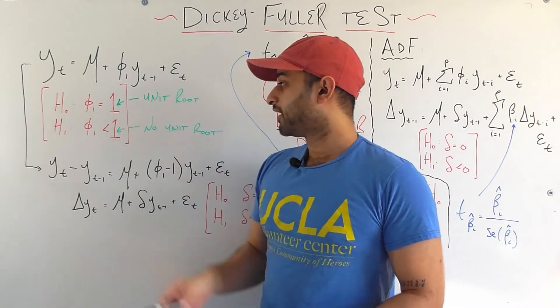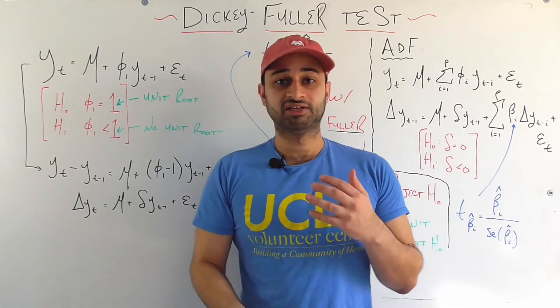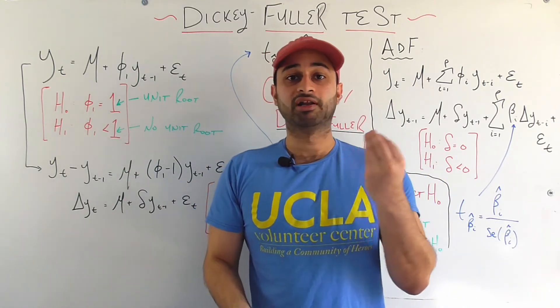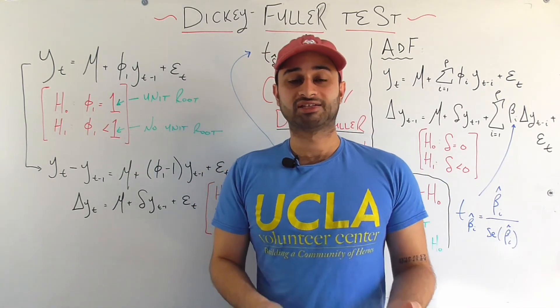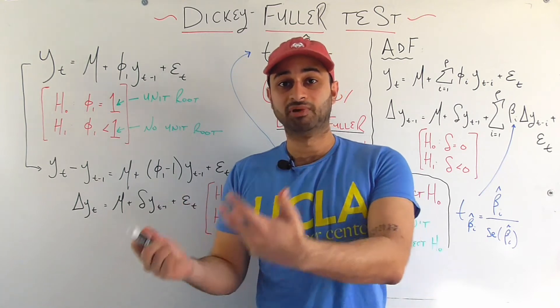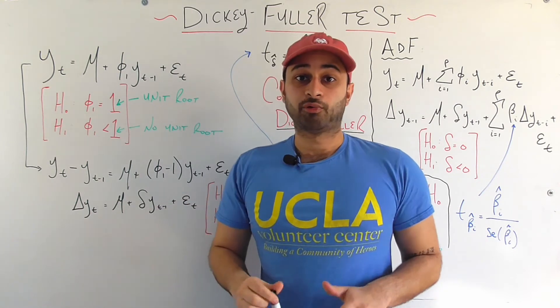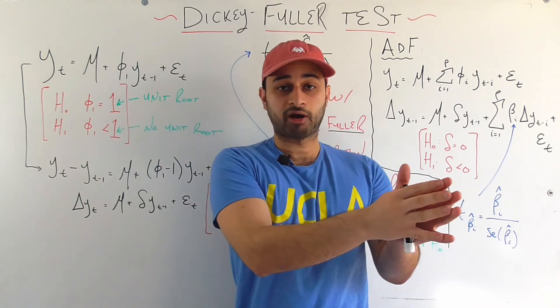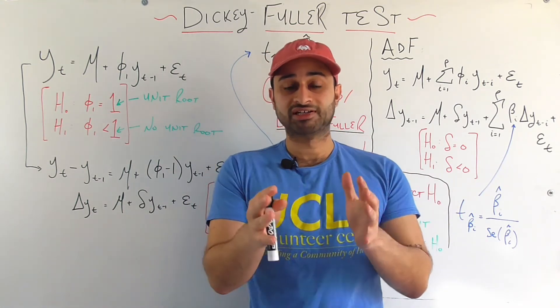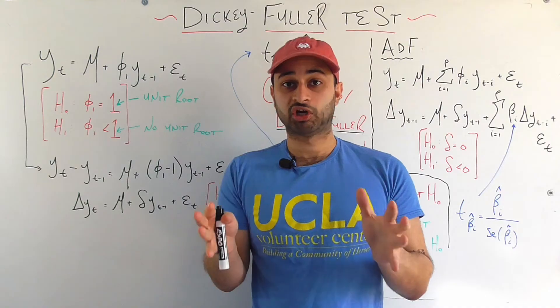The alternative hypothesis is that phi_1 is less than 1, in which case the time series would be stationary. So now we see why this null and alternative hypothesis do indeed test for stationarity.